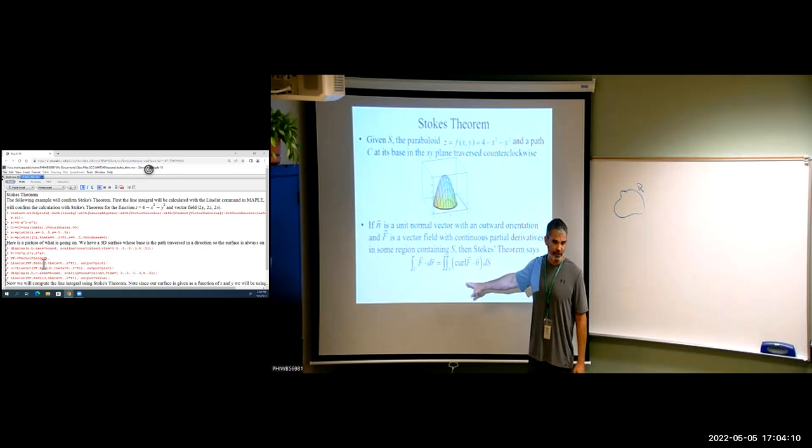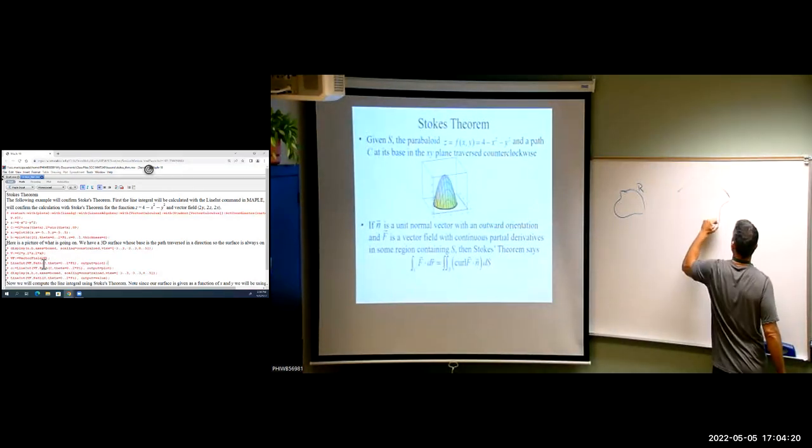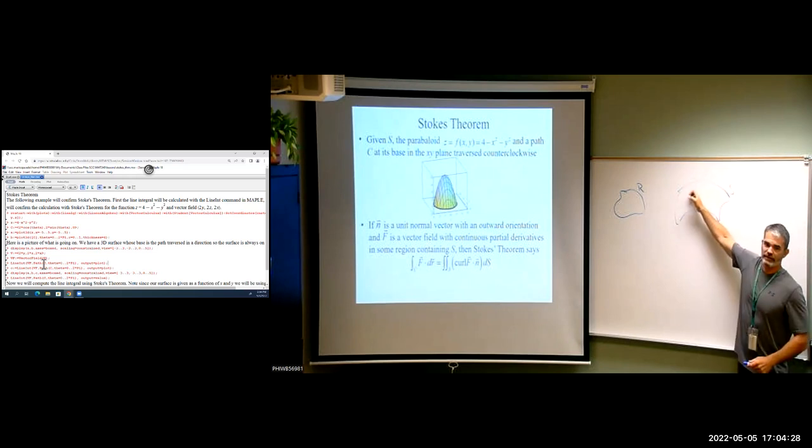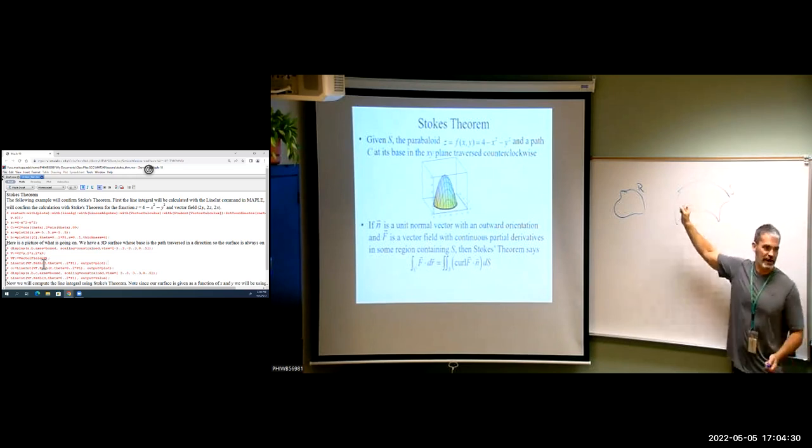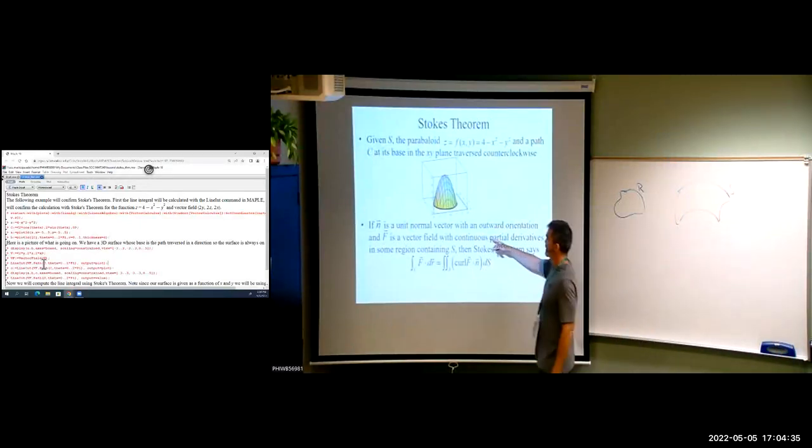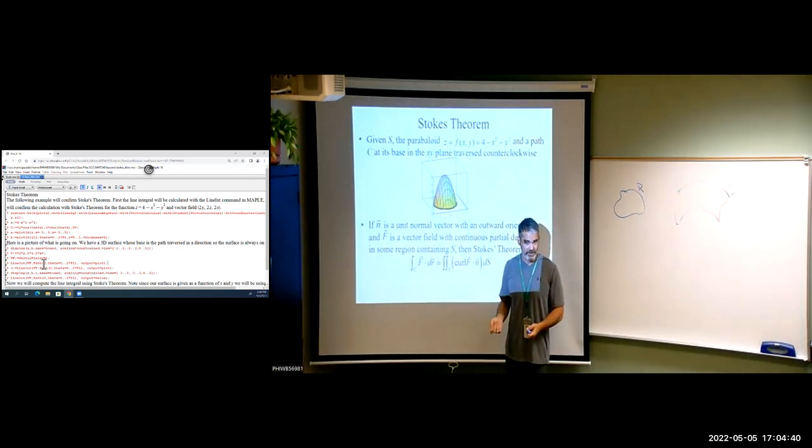What that means is S is a surface as opposed to R, which is a region in the XY plane. So now what's happening is we're going over a surface. But the same basic principle holds. All that circulation going on along the surface is going to cancel each other out. So we only end up with the circulation that is along the base. And if that base is our path C, then what we get is the line integral. That's what Stokes' Theorem says.